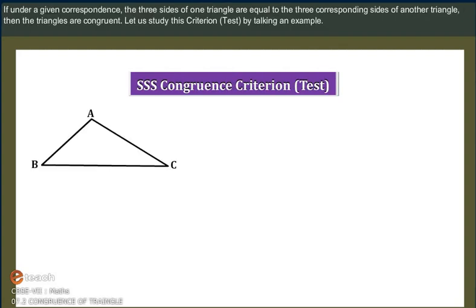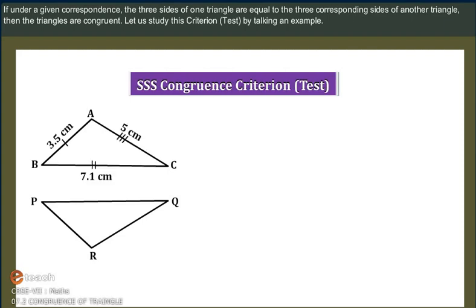If under a given correspondence, the three sides of one triangle are equal to the three corresponding sides of another triangle, then the triangles are congruent.